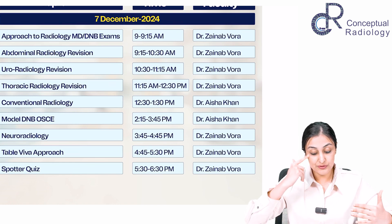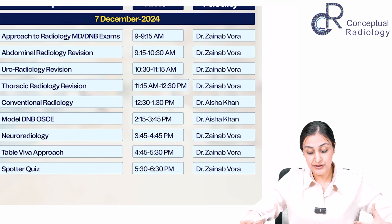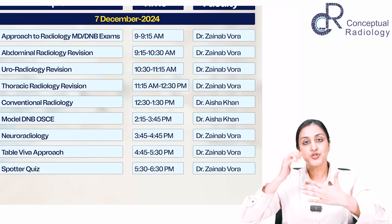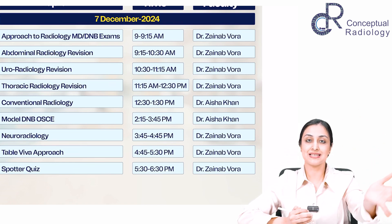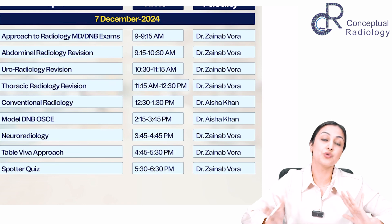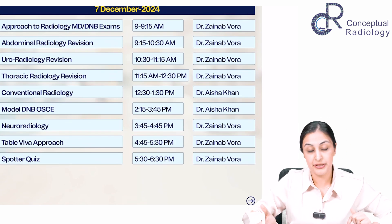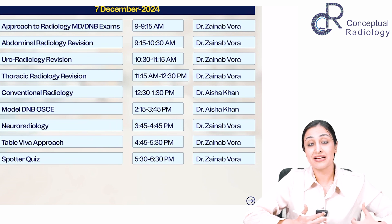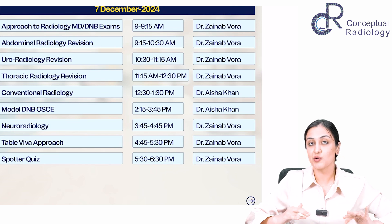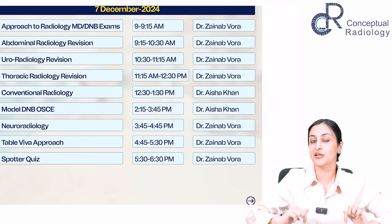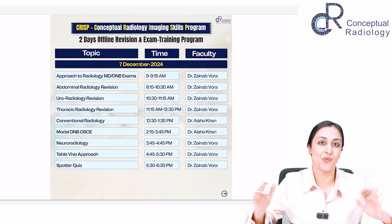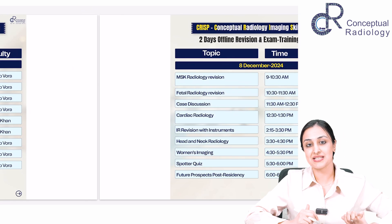Abdominal radiology, uro-rad, and thoracic radiology will be covered by me. Then we'll have conventional radiology by Dr. Aisha, and she'll also conduct a model DNB OSCE for you — where you first go through it like an actual exam, write the answers, and then she discusses how you should have approached it. It's like a model DNB OSCE in an actual exam-like setup. Then I'll take up neuro-rad, followed by a table viva approach session. We end Day 1 with a spotter quiz — our favorite part — where we'll award the winners with some goodies.